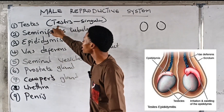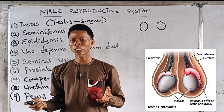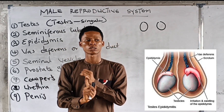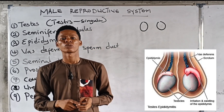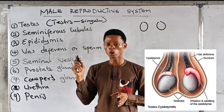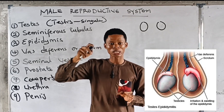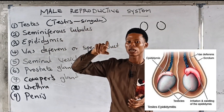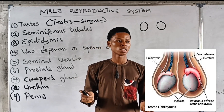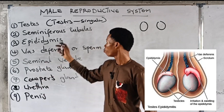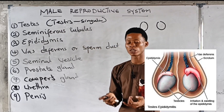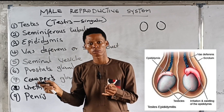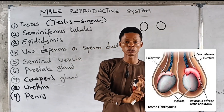The function of the testis is production of sperm and testosterone. Testosterone is produced in the gonad, and the gonad for the male is the testis. Testosterone is involved in giving the male secondary sexual characters. The testis is involved in the production of sperm, but there is a specific part of the testis that produces sperm — we'll look at that. It also produces the hormone testosterone.